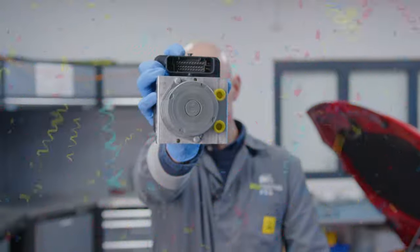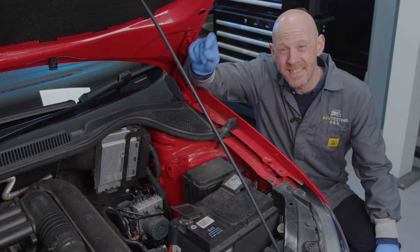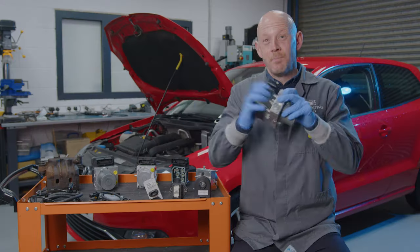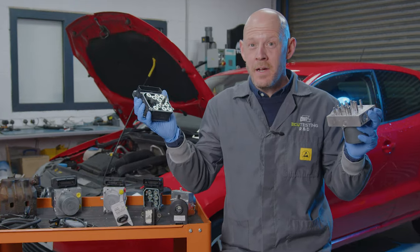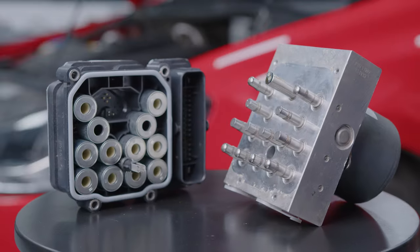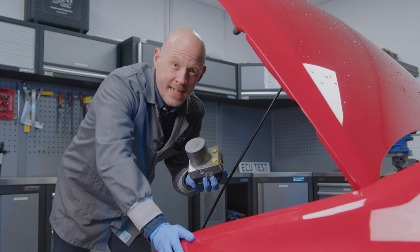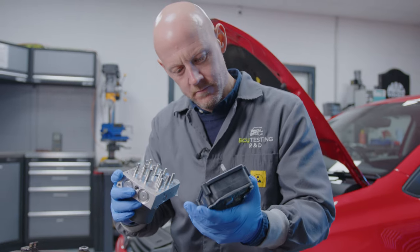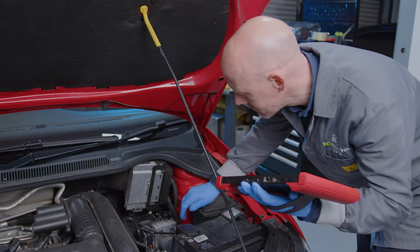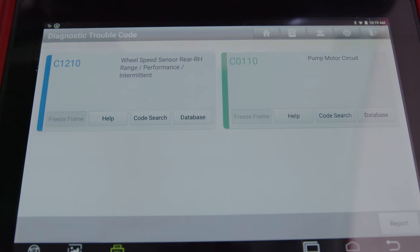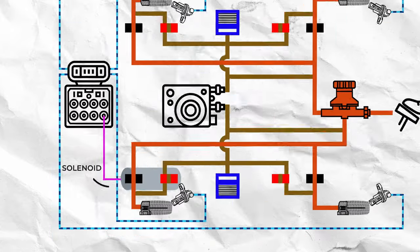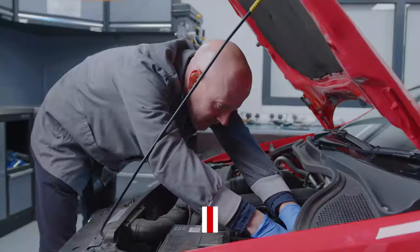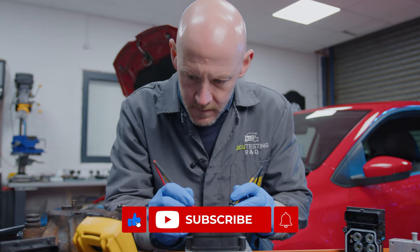This is the ABS unit. Your vehicle is almost definitely fitted with one, and you probably know that it is part of the anti-lock brake system. But do you actually know how it works? Understanding all the components within the system is extremely beneficial when diagnosing an ABS related fault code. In this video, I'm going to run you through the whole modern anti-lock brake system so you can arm yourself with some key knowledge for the next time you have an ABS fault.